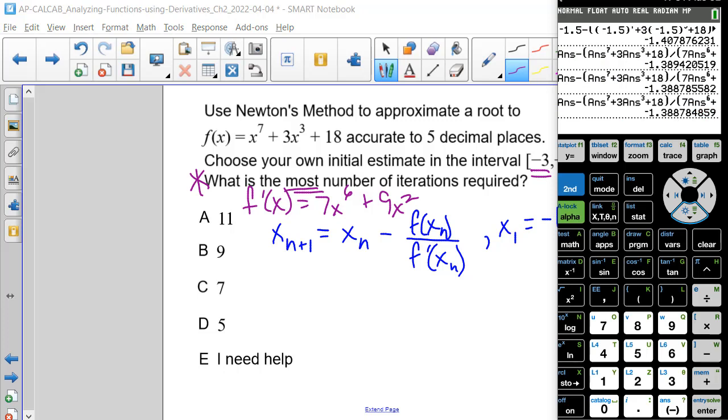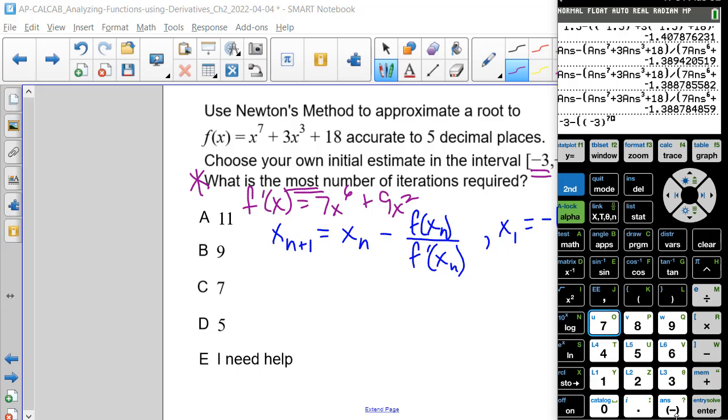So we'll do negative 3 minus, open the parentheses, you have negative 3 being raised to the 7th plus 3 times negative 3 raised to the 3rd.